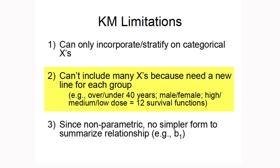But we can't include many explanatory variables, because we would need a new curve for each group. For example, if we wanted to include three variables like over vs. under 40, male vs. female, and high-medium vs. low-dose, we would have 12 survival functions. Also, since Kaplan-Meier is non-parametric, there is no simpler form to neatly summarize the relationship between x and y.